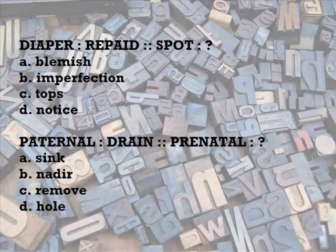You may get one or two wordplay analogies. For example: diaper is to repaid as spot is to — A) blemish, B) imperfection, C) tops, D) notice. Diaper is repaid spelled backward, just as spot is tops spelled backward.